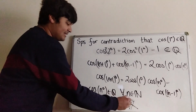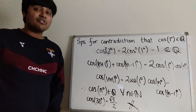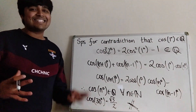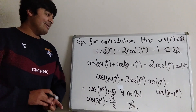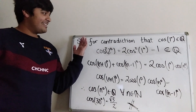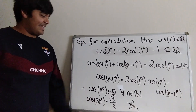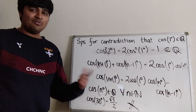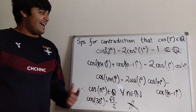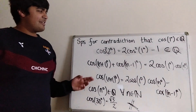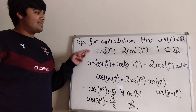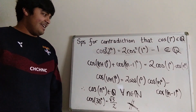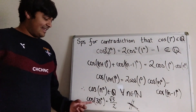So that means cosine of one degree cannot be rational and hence must be irrational — which is a really nice result, and that concludes the proof. It combines two forms of proof and is all in all very slick. Essentially the only things we've used are the double angle formula to get to this result, and the fact that cosine of 30° equals root three over two.